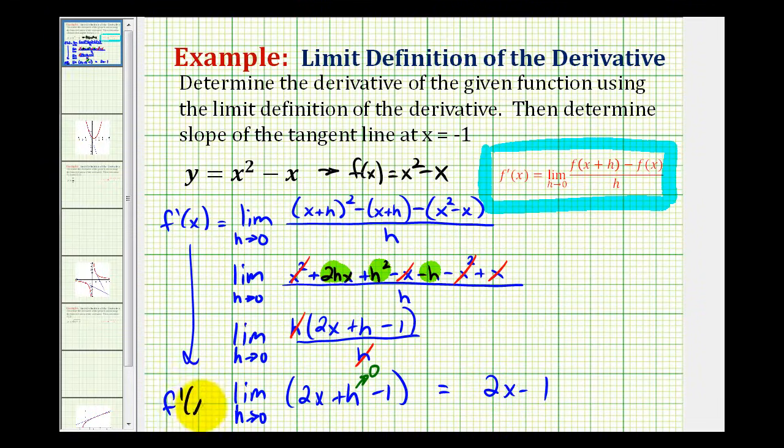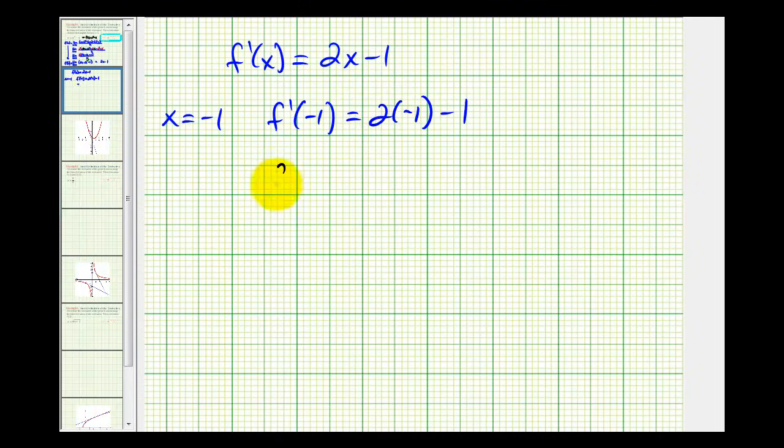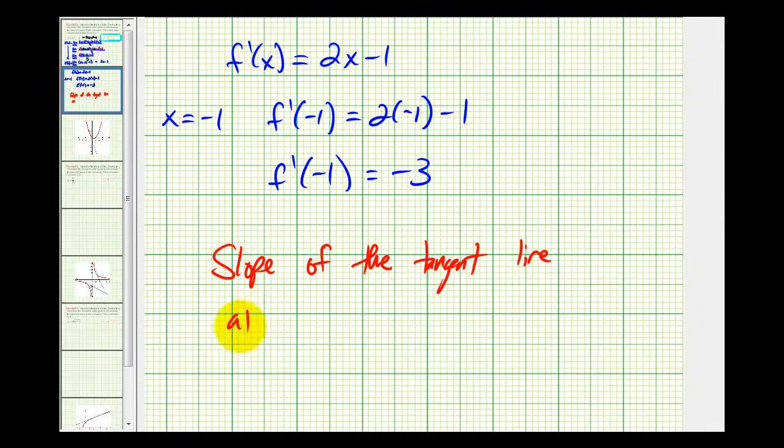Which is f prime of x, or our derivative of f of x. So let's go ahead and take this information on the next slide and determine the slope of the tangent line. So if f prime of x equals 2x minus one, the slope of the tangent line at x equals negative one will be f prime of negative one. So we have two times negative one minus one, so f prime of negative one is equal to negative three. So the slope of the tangent line at x equals negative one is negative three.